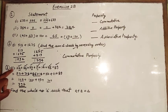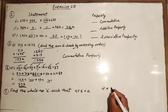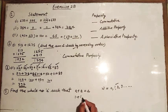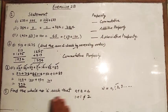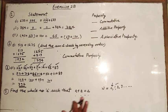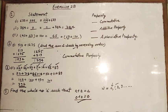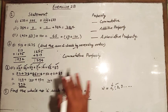Question number five: find the whole number a such that a plus a equals a. Whole numbers begin from 0, 1, 2, 3 and so on. If we take 1, then 1 plus 1 equals 2, which does not satisfy the condition. Similarly 2 or 3 do not work. Only 0 satisfies it, because 0 plus 0 equals 0. So the answer is a equals 0. This is Exercise 2B.